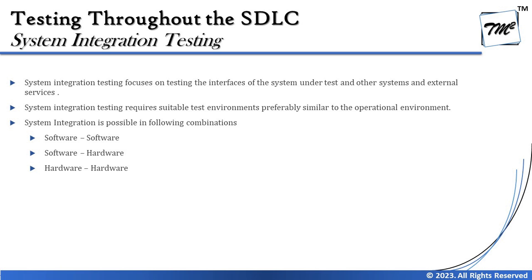Let's discuss what different ways system integration testing can happen today. There are three combinations: software-software, software-hardware, and hardware-hardware. Taking Amazon as an example — Amazon is a shopping e-commerce website. Did you know that Amazon doesn't own its own payment options? In India, there is Amazon Pay as a built-in wallet, but beyond that they only offer cash on delivery.